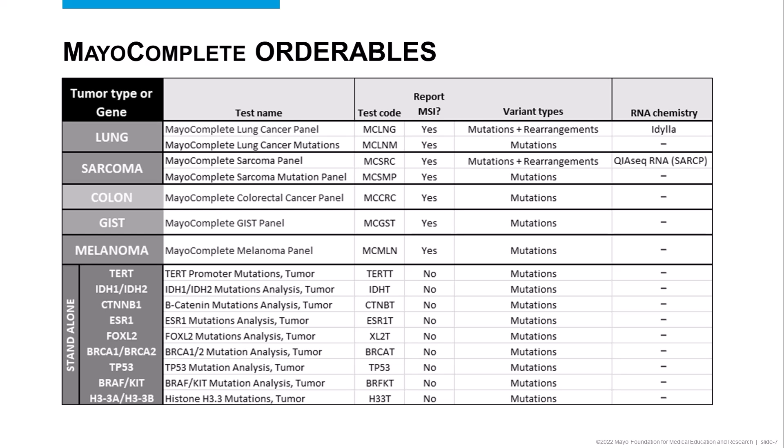These are the 16 orderables that we've created. In the first column you can see what they were created for — for instance, for lung cancer patients, sarcoma patients, etc. You can also see the actual test name, the test code, whether an MSI or microsatellite instability result is provided with that particular test, and the types of variants that we assess for. When we say mutations, we mean single nucleotide variants or indels. And by rearrangements, for the most part we mean gene fusions, and also the MET exon skipping mutation. Here's the Mayo Complete Lung Cancer panel as an example — the test code is MCLNG, we provide an MSI result with that orderable, and this test actually tests for both mutations in the DNA and the RNA.